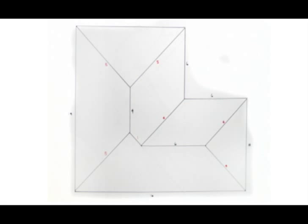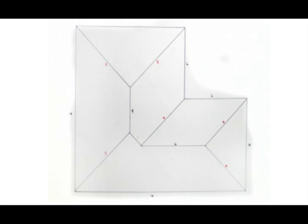The ridge member for this section runs parallel to the projection of this addition and is equal to that projection, which in this case is six feet. Finally, with the dotted line shown, you can see that the remaining section of the hip between the addition and the taller ridge member is the difference between these two numbers. The old hip was five feet, leaving a remainder of one foot on the hip scale. The more you study the plan in this way, the more you will understand how to break down complicated roof systems into smaller sections.